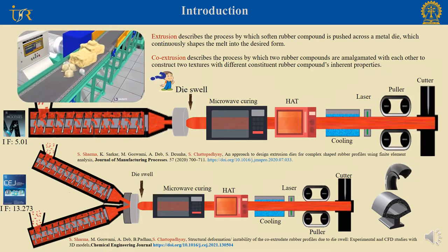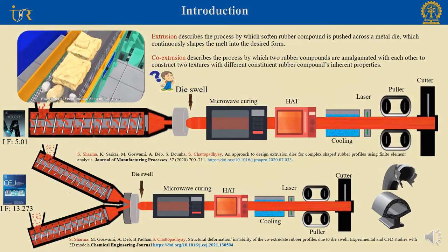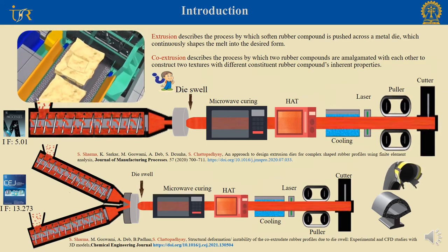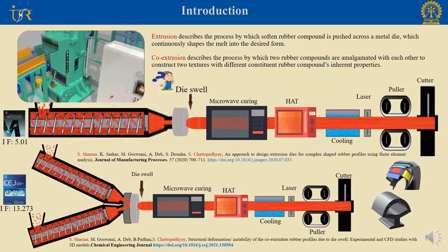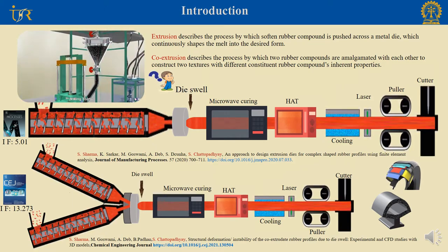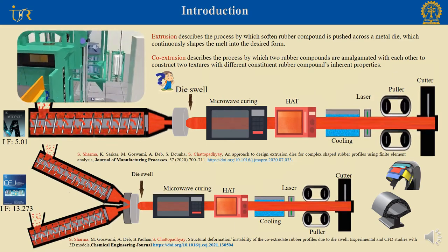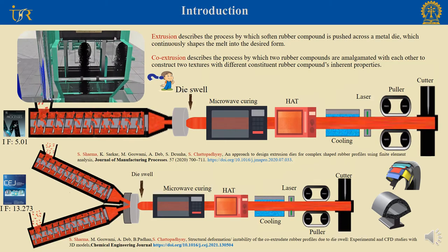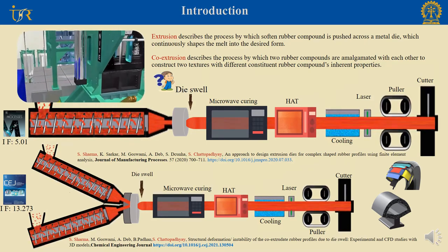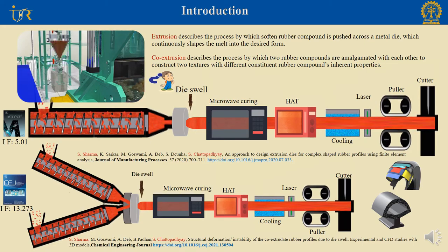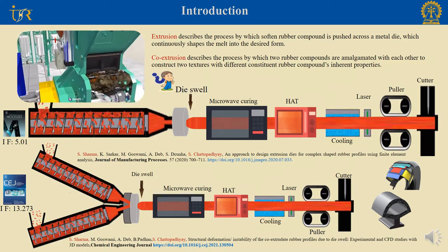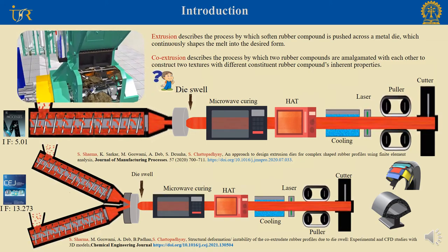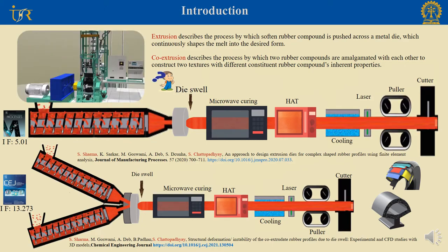Here I am going to give a brief description of the rubber extrusion process and the problems that arise during processing. Extrusion is a process by which rubber compounds are forced through a die to get a desired shape of the product. Raw rubber, filler, and other additives are mixed in an internal mixer followed by a two-roll mill, then the compound is fed to the extruder and forced through a die, followed by microwave and hot air tunnel for curing, then cooling and finally cutting to the desired length.